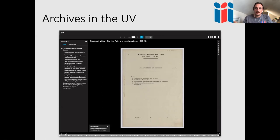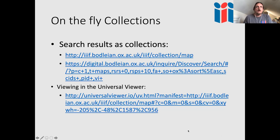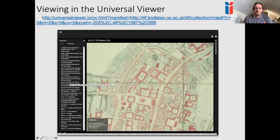There are benefits to having many manifests in a collection and benefits to having a big manifest with fewer collections — it depends on your use case. A good rule of thumb: if it's a physical thing you can pick up and take around, it should be a manifest; if it's a collection of those things, it should be a collection. Another use case is on-the-fly collections — the Bodleian Library gives access to search results as IIIF collections, so you can open search results directly in the Universal Viewer and navigate or annotate them.